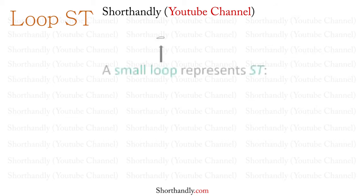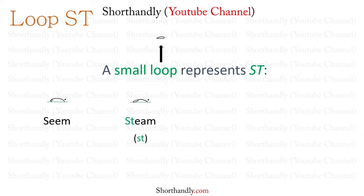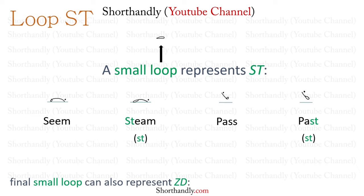A small loop represents ST. For example, this is the word SEEM, but the same word with the small loop becomes STEAM. Same way, this is the word PASS, but the same word with the small loop becomes PASSED. Now, this small loop can also be used finally to represent the heavy sound of ZD — for example, in the words REFUSED and OPPOSED.